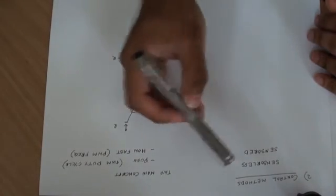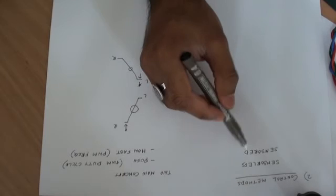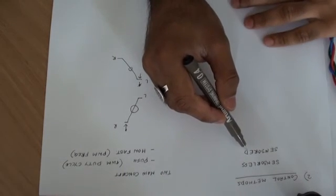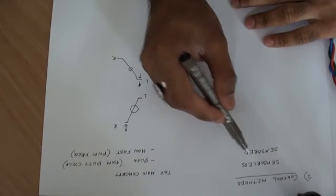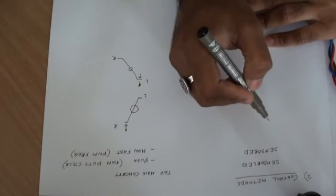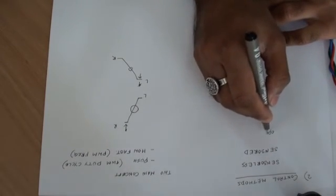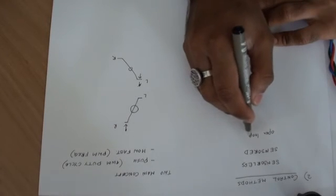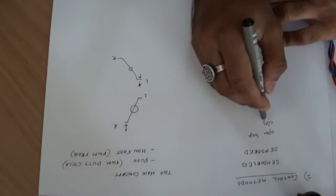So when you are controlling this motor, whether in sensorless or sensored method, you have two ways to run it: you either run them in open loop or you have a closed loop.